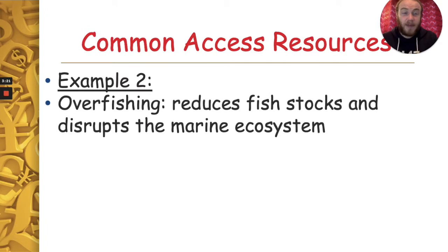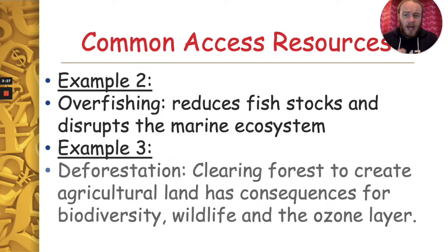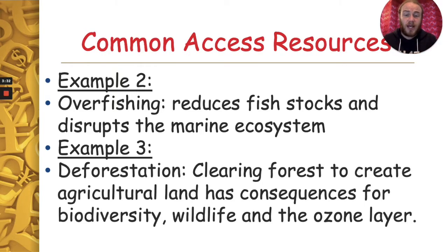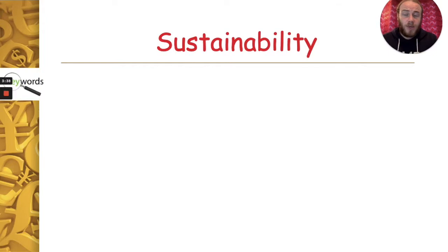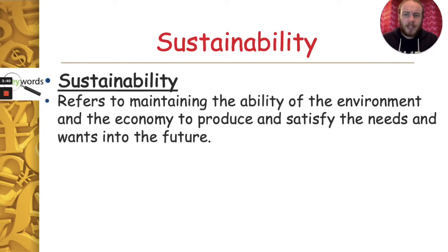A second example is overfishing, which reduces fish stocks and disrupts the whole marine ecosystem. Another example is deforestation — clearing the Amazon rainforest to create agricultural land — which has massive consequences for biodiversity, wildlife, and the ozone layer.